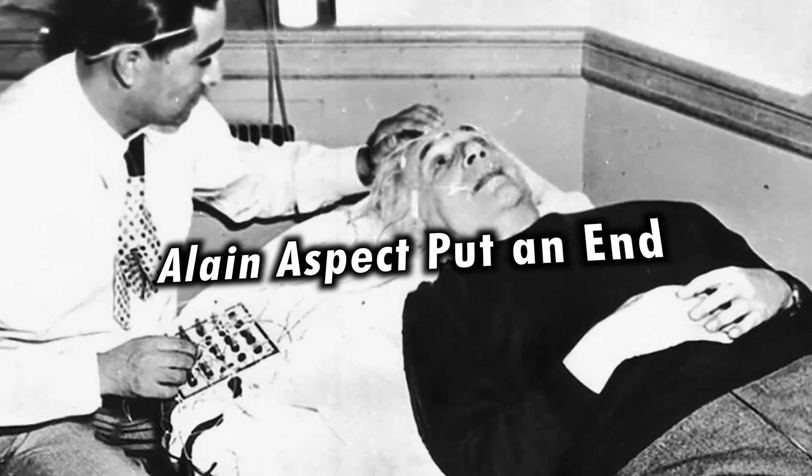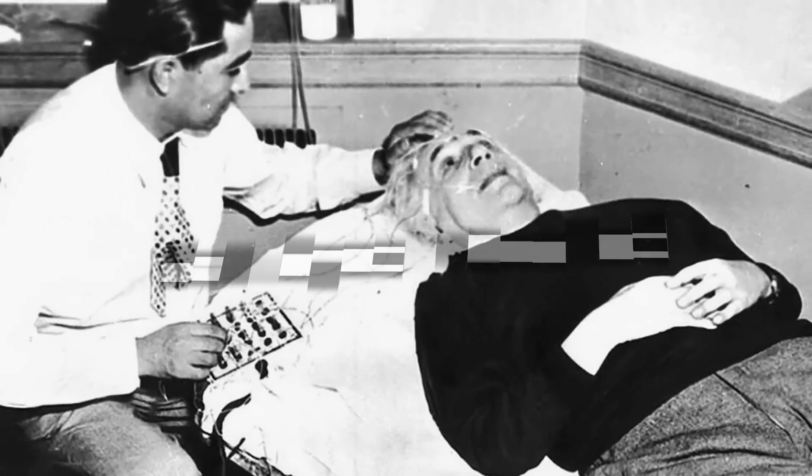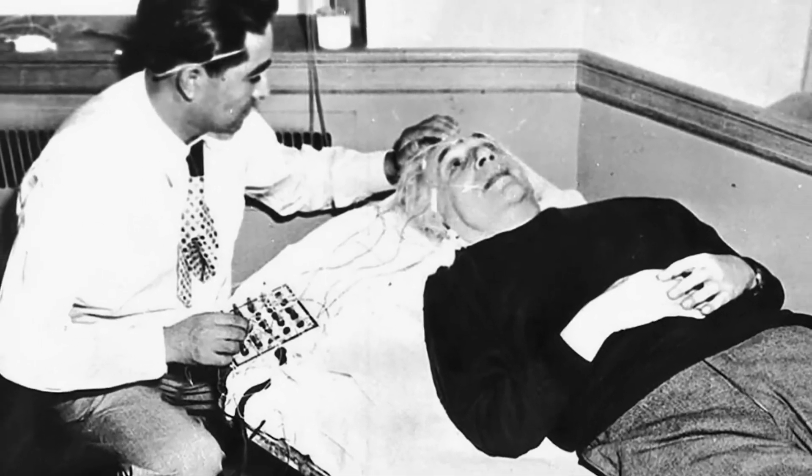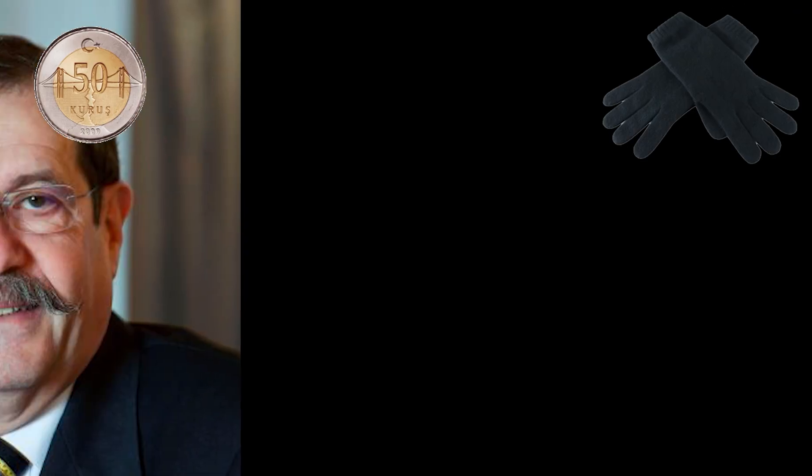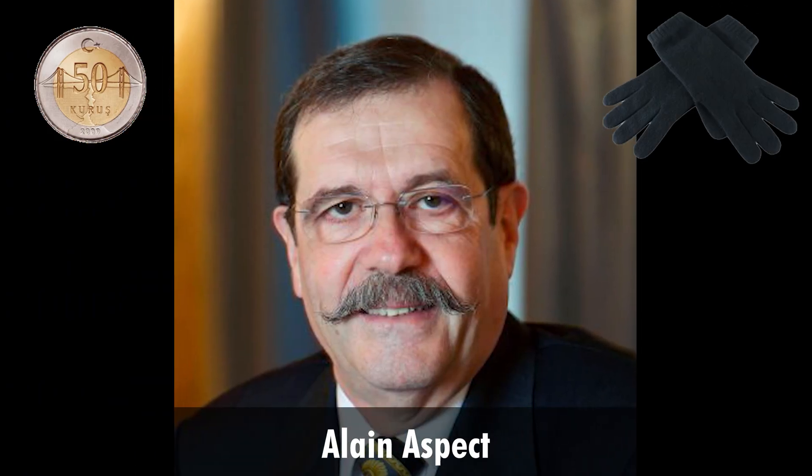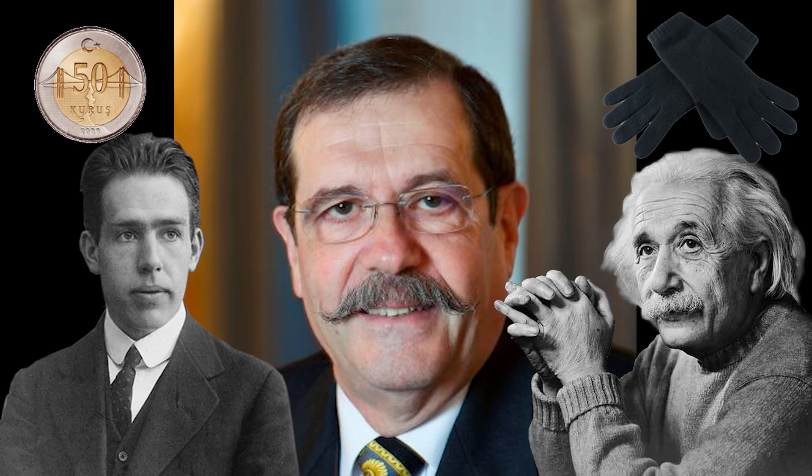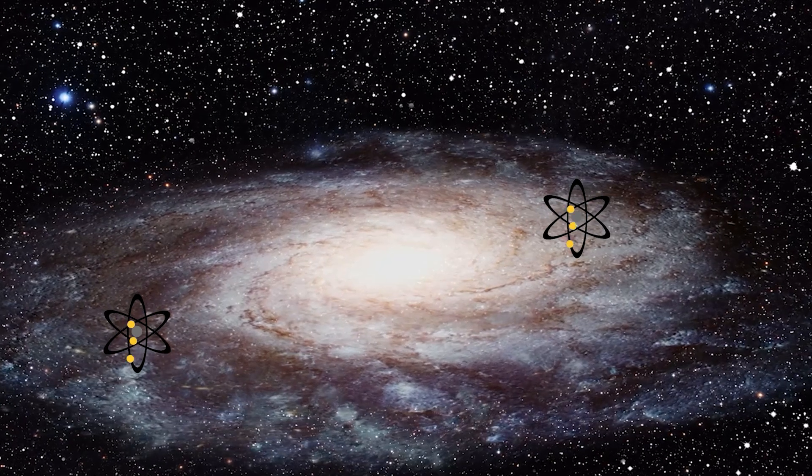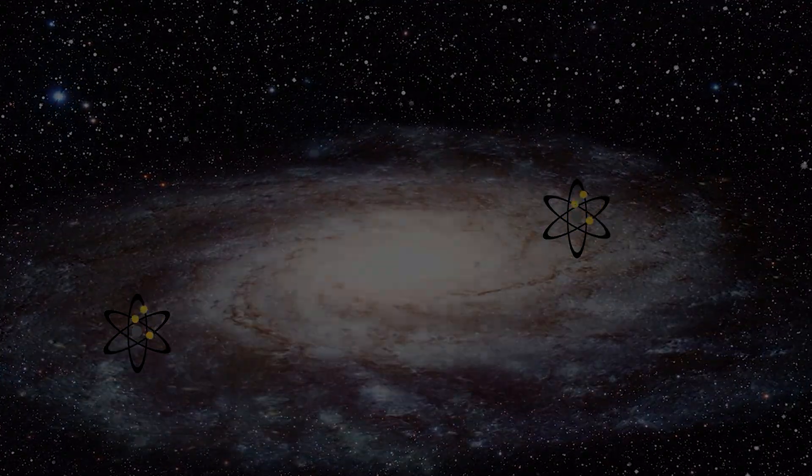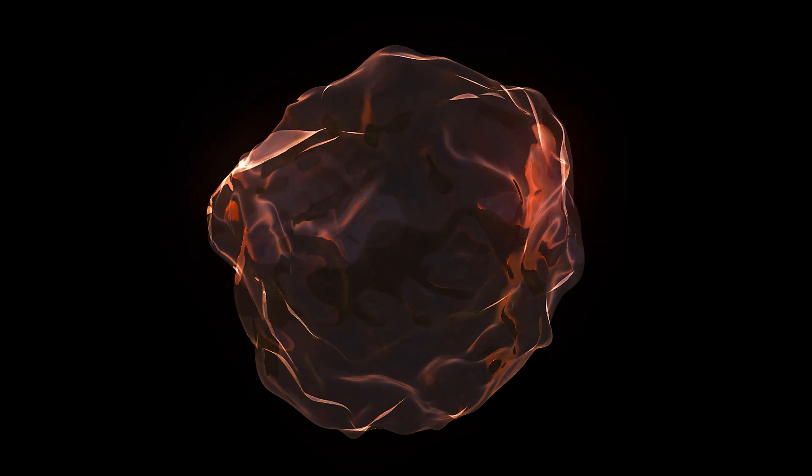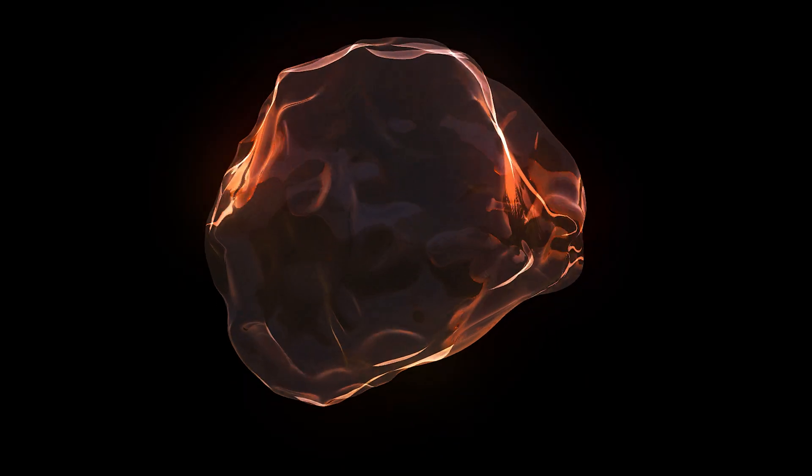When Einstein died in 1955, the answer to the question was still not found. However, the French physicist Alain Aspect put an end to this issue. Aspect's experiments proved Niels Bohr was right in an incredible way. Einstein had been wrong. Particles could communicate over long distances, interestingly, even at interstellar distances.